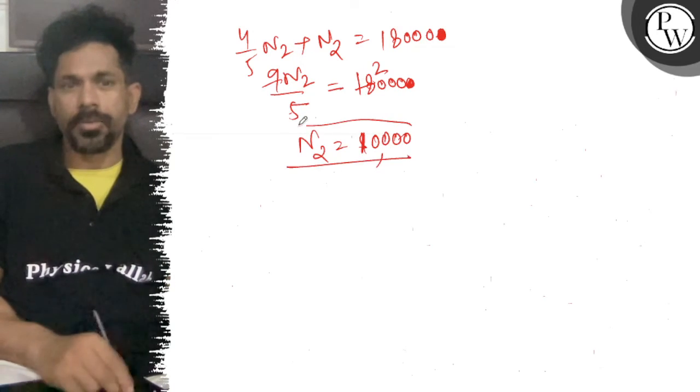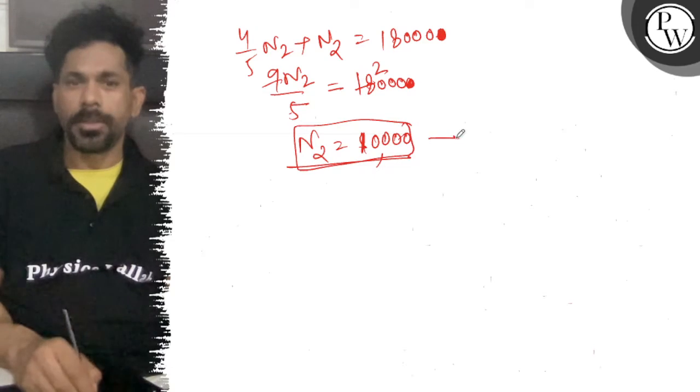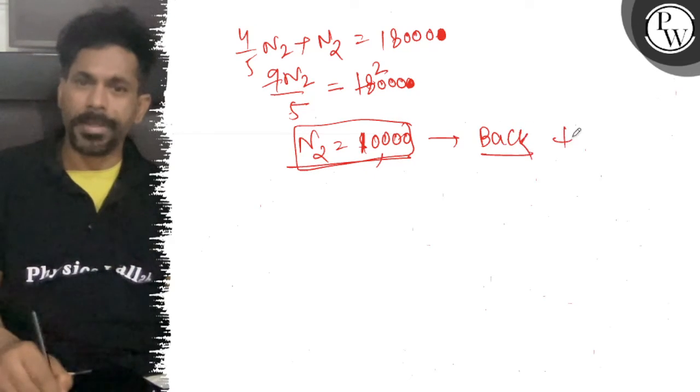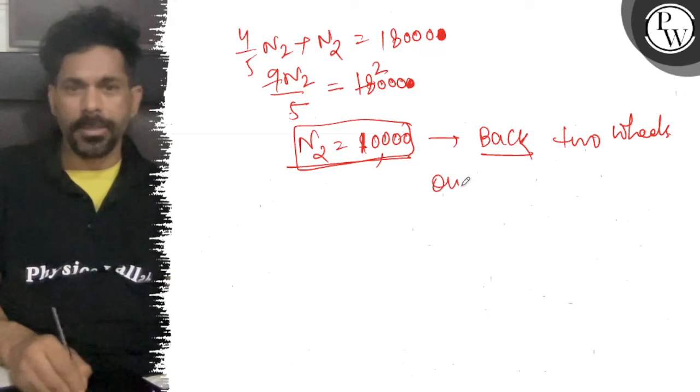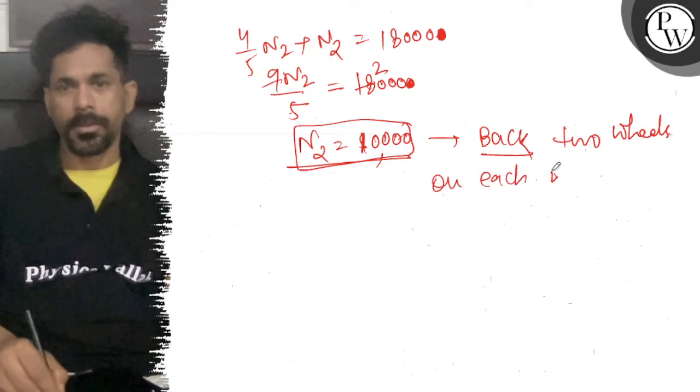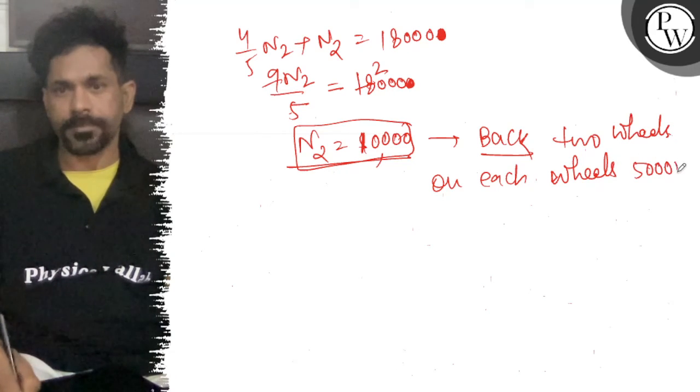Now this n2 is on both wheels, back two wheels. So on each wheel, how much is it? Each wheel, 5,000 newton.